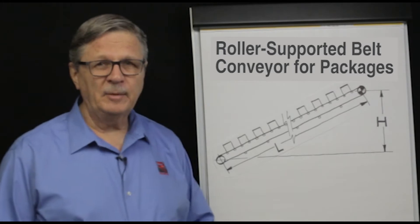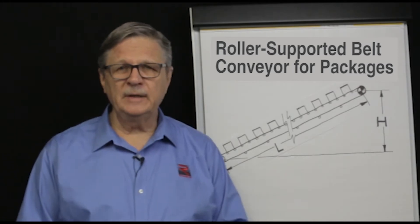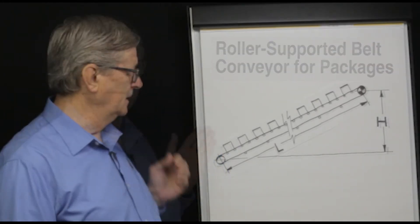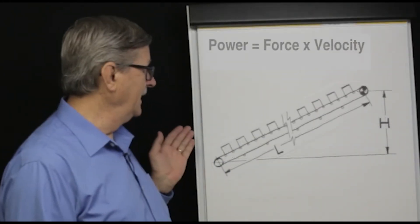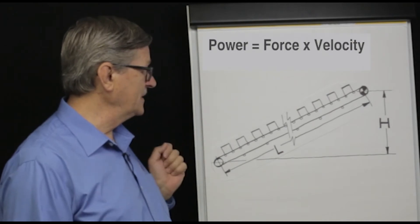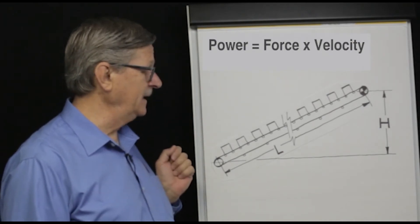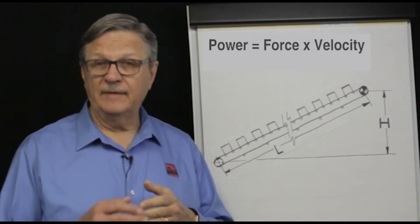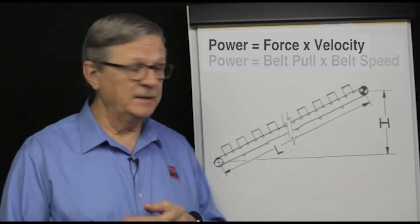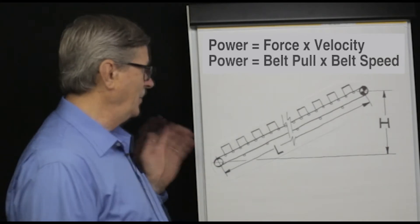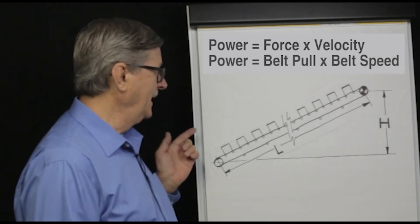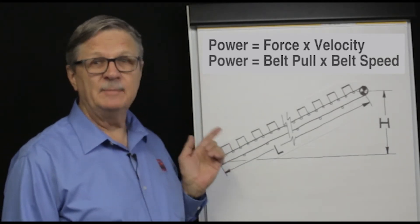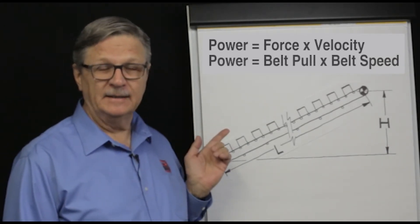Probably the most important equation I will share with you today is this one: power equals force times velocity. Or in conveyor belt terminology, required power equals belt pull times belt speed.